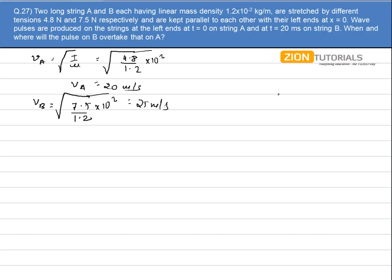Now let us say this is my two strings A, this is my another string B, each having a tension, each having a velocity. Now pulse is generated at A first and after 20 millisecond the pulse is generated at B. And let us say they overtake each other at a distance of x.